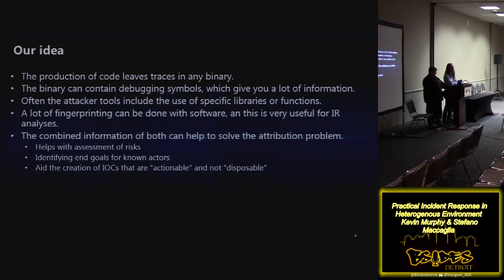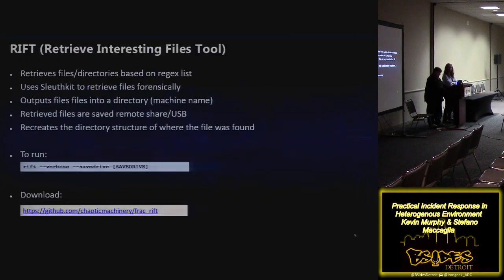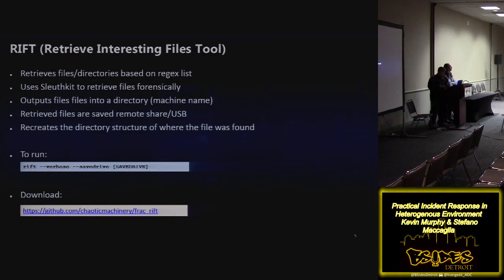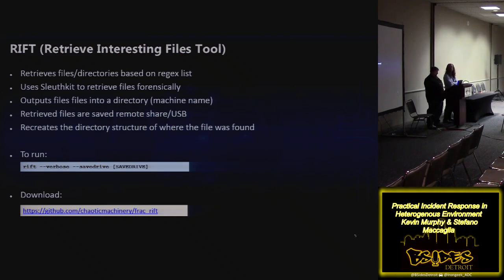We want to create actionable IOCs that aren't disposable. As we know, IOCs are only good for a certain number of days or weeks, so we want something that's going to be good for a longer period of time than just 20 days. One of the tools I developed to help with triage and mitigation is called RIF — Retrieve Interesting Files Tool.